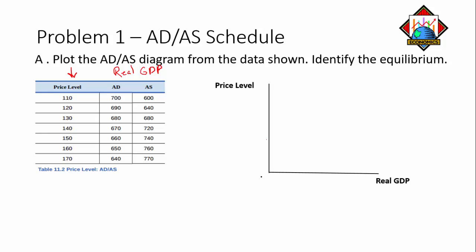I'm going to go ahead and map the data out on the graph. The origin is zero for both axes, and I can make little squiggly marks to indicate missing data in between. I'm going to take my price level range from 110 to 170, with the middle value being 140.